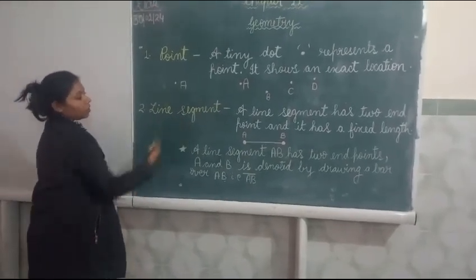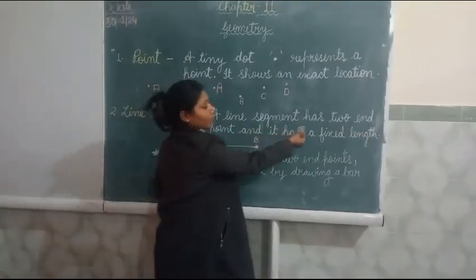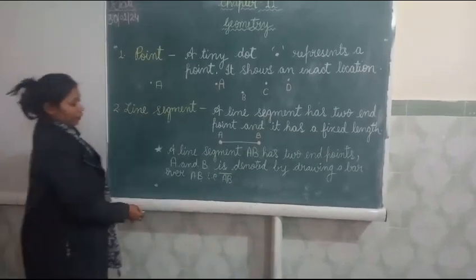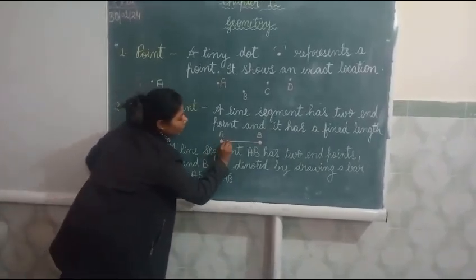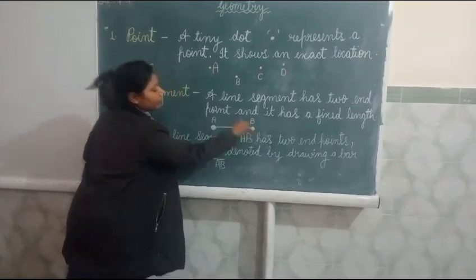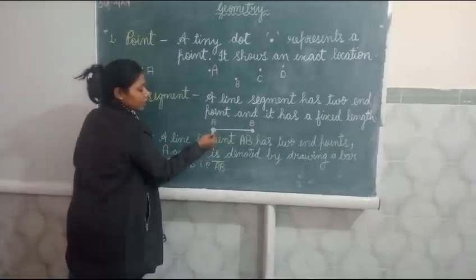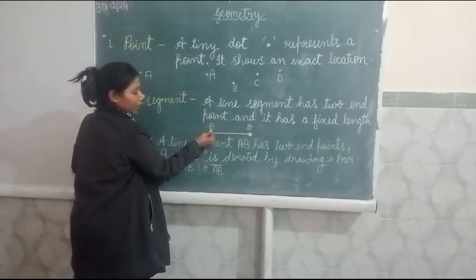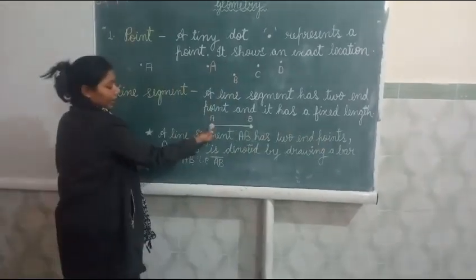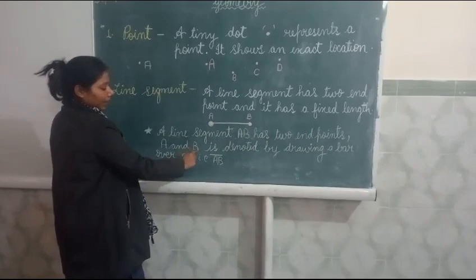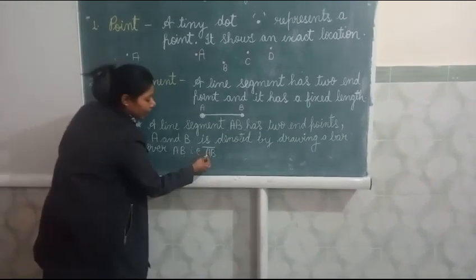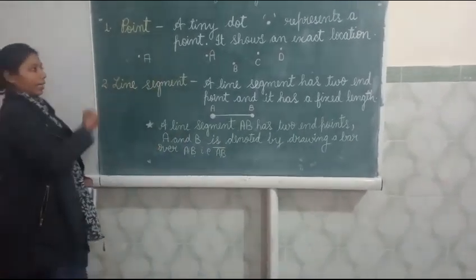Second is line segment. A line segment has two end points and it has a fixed length. For example, we draw a line and give point A and point B. The two points are joined. So we give the name point A and point B. A line segment AB has two end points. You see A and B. A and B is denoted by drawing a bar over AB. That means AB bar. This is called a line segment.